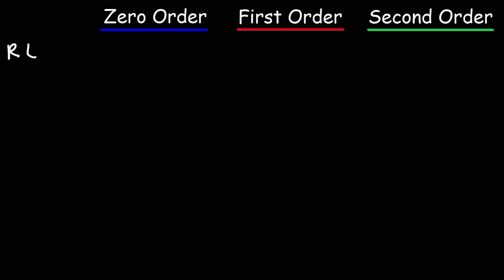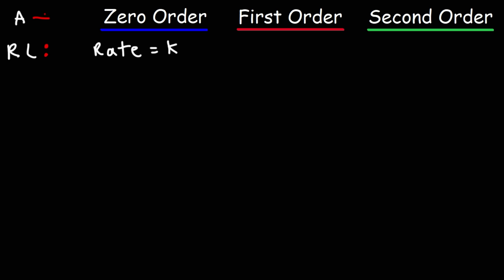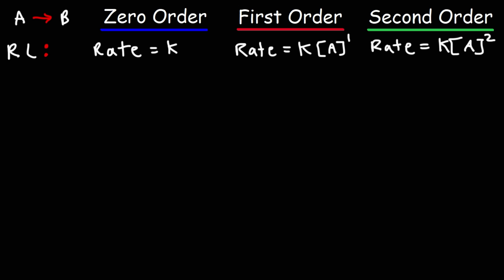Let's begin our discussion with the rate law expression for each of these ordered reactions. For a zero order reaction, the rate is equal to k times A raised to the zero power. Anything raised to the zero power is one, so the rate is simply equal to k. For a first order reaction, the rate is equal to k times A raised to the first power. For a second order reaction, the rate is equal to k times A raised to the second power.